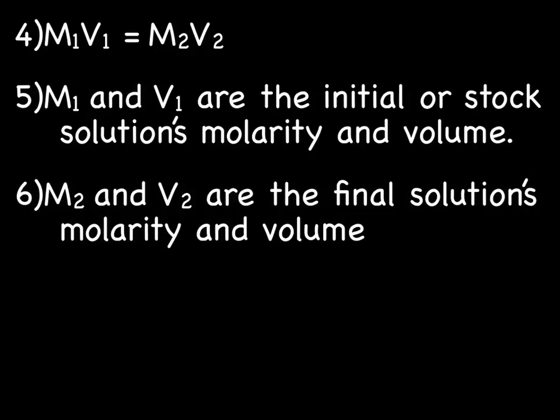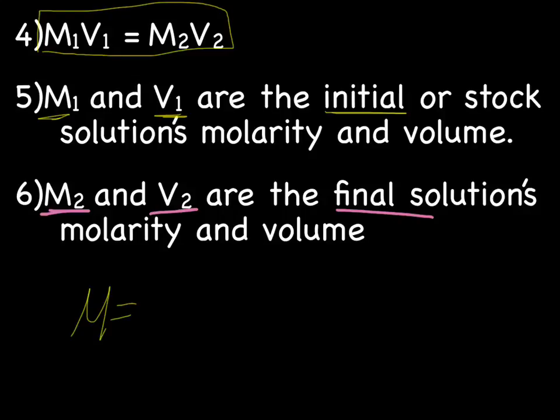So to do this, we use the formula, M1 times V1 equals M2 times V2. And M1 and V1 are the initial stock, the initial molarity and the initial volume. And you'll note, if you remember the molarity formula, we had M molarity equals mol over liter. The volume unit for the molarity formula had to be liters. This time, it just says volume, which means we can use liters or milliliters or deciliters or whatever.